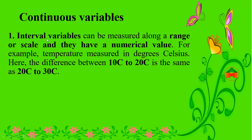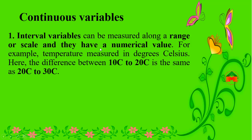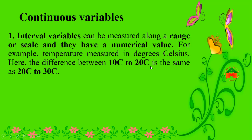Now we are going to see continuous variables. An interval variable is a continuous variable that can be measured along a range or scale and has a numerical value. For example, temperature measured in degrees Celsius — the difference between 10°C and 20°C is the same as the difference between 20°C and 30°C.